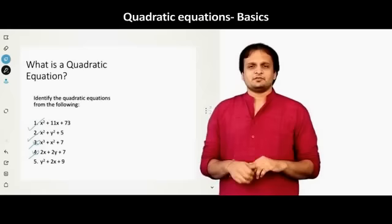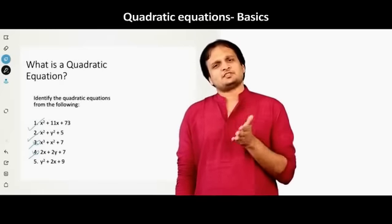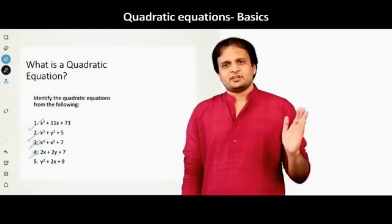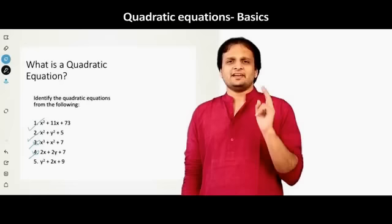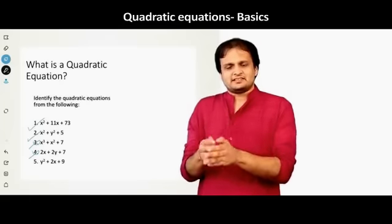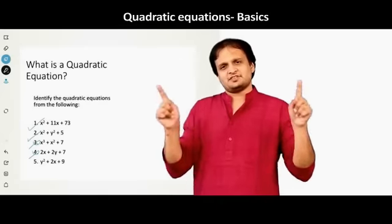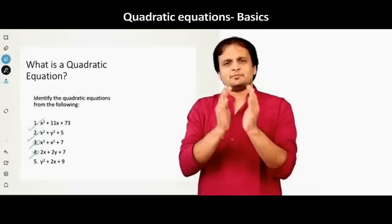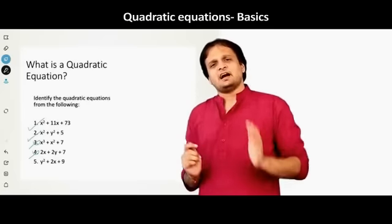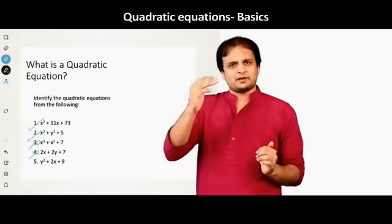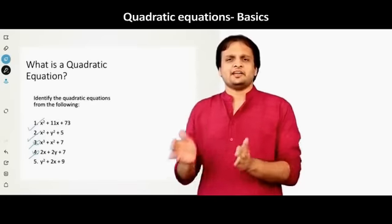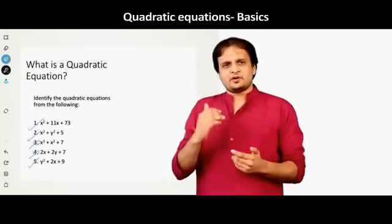And then look at the fifth one. So what does the fifth one say? y square plus 2x plus 9. Okay. So y square, what is the power of y? 2. 2x, what is the power of x? 1 and then 9. So if the whole expression is taken together, y square plus 2x plus 9, the highest power that we get is 2. For y, y square. So this is again quadratic.